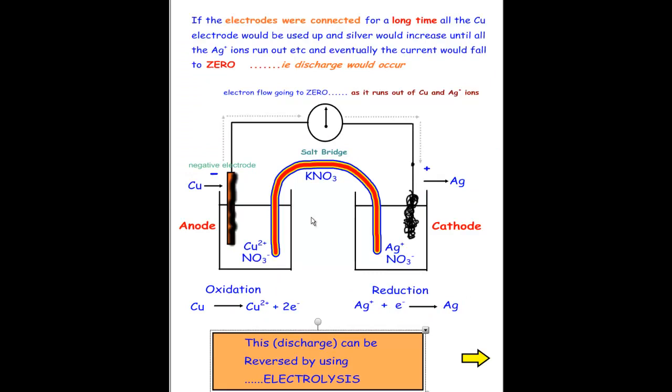Now here's a diagram which shows what would happen over time. If we had this running over a long period of time connecting, what will happen is that the copper will eventually be dissolved away producing copper ions all the time. And a lot of silver would be depositing on this side. So it would be increasing the concentration of copper ions. And over here, the silver ions would run out. So once the silver ions run out, you can't get silver forming. And once the copper runs out, you can't get any more copper. So the process would stop. That's why the electron flow goes back to zero. So this discharge will occur. Batteries eventually discharge.